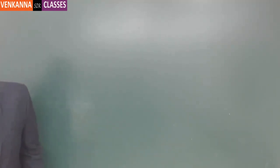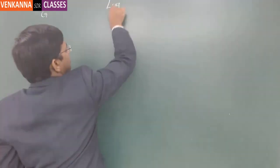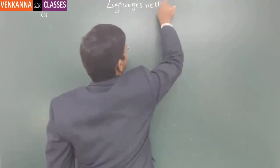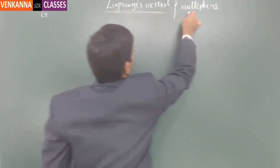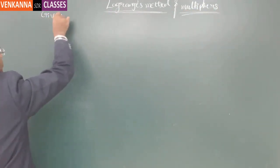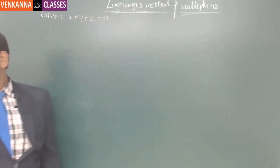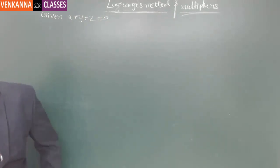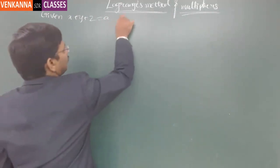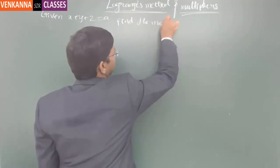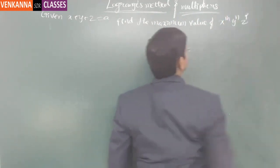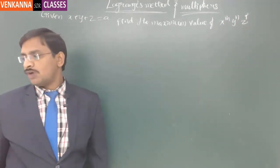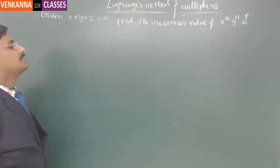The problem statement is: given x plus y plus z is equal to a, find the maximum value of x power m, y power n, z power p using Lagrange's method of multipliers. We have to find the maximum value of x^m · y^n · z^p subjected to the condition x plus y plus z equals a.